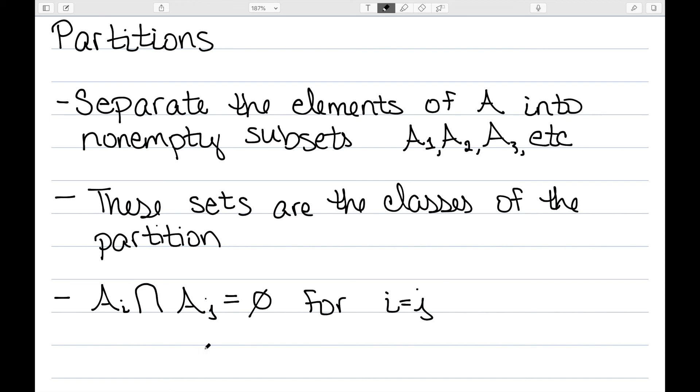The first: Aᵢ intersect Aⱼ is equal to the empty set for i not equal to j. So what this says is if we pick any two distinct sets, their intersection is empty.